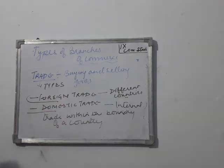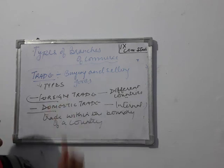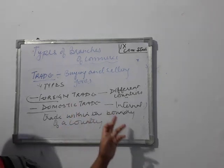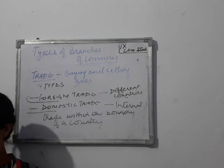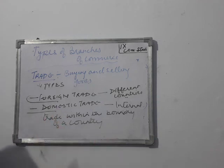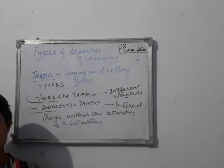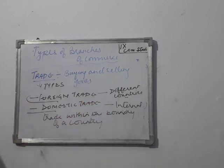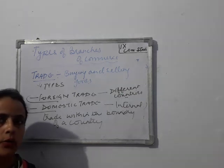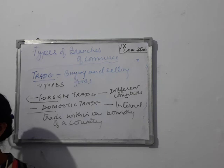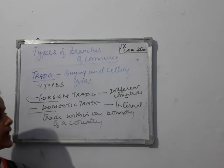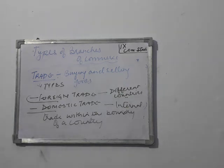To sum up: trade is buying and selling of goods at two levels. The first is domestic trade — internal trade done within the boundaries of a country. The second is international trade, external trade, or foreign trade, which is done between countries where customers and buyers belong to different countries. More details on foreign trade and domestic trade will be covered in the next class. The homework for today is to prepare your notes in your fair notebooks up to the point taught so far.